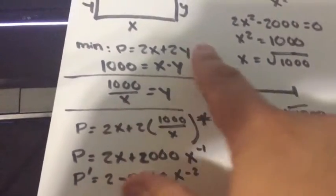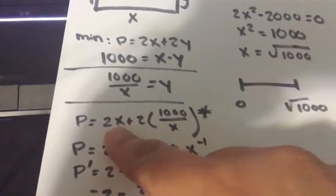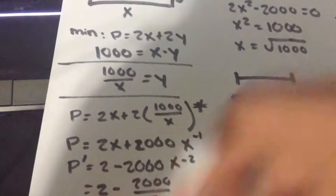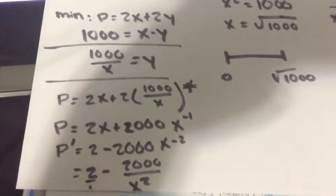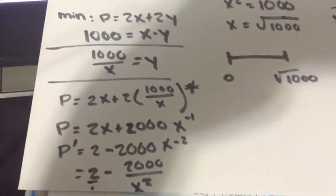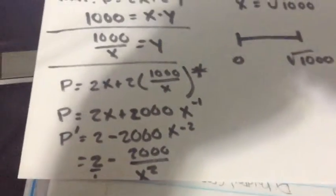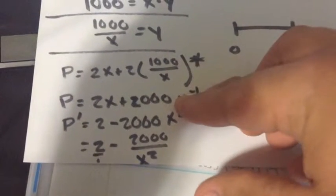So you plug that into this equation. It will be p equals 2x plus 2 times y which is going to be 1000 over x. And now you simplify it here.